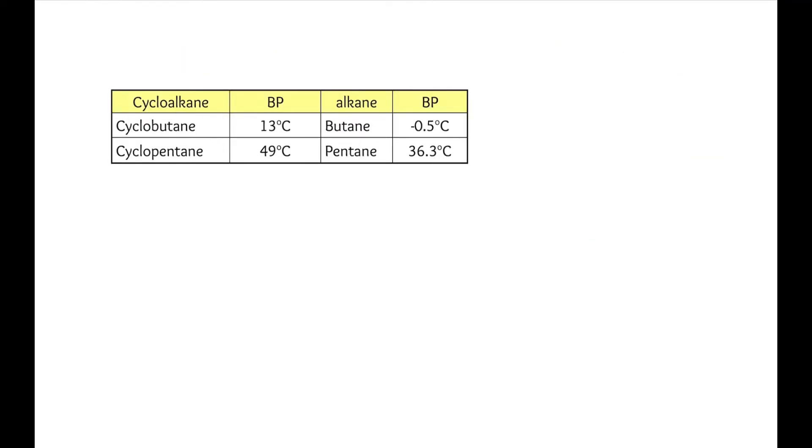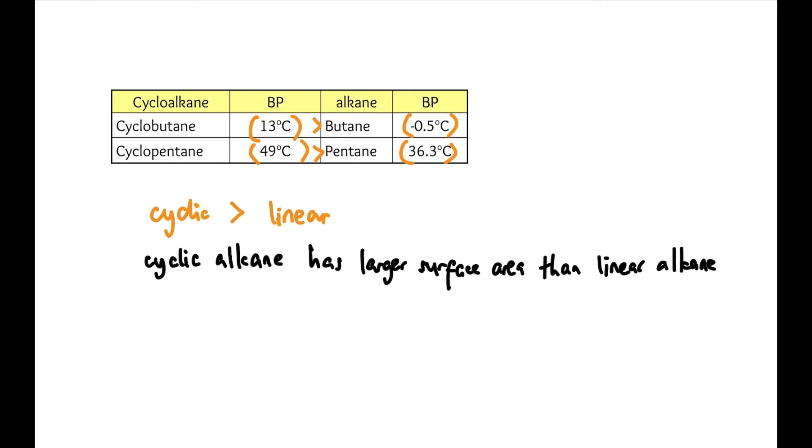Let's discuss cyclic compounds. If we look at this table, it's a comparison between cyclic and linear alkanes. Cyclic has a higher boiling point than linear, provided the size is the same. If we compare cyclobutane with butane, cyclobutane's boiling point is higher. Cyclopentane compared with pentane also shows cyclopentane is higher. In conclusion, cyclic is higher than linear because cyclic alkanes have larger surface area compared to linear alkanes, provided the size is the same. When surface area is larger, van der Waals forces are stronger, so more energy is required to overcome the van der Waals forces. That's why the boiling point is also higher.